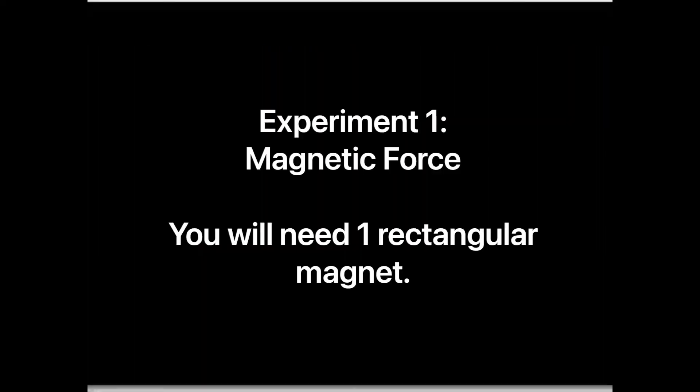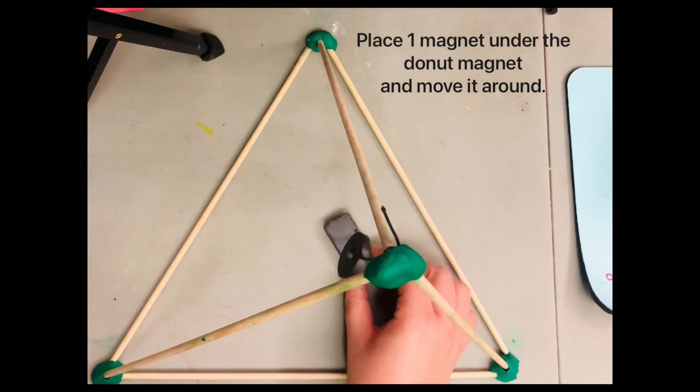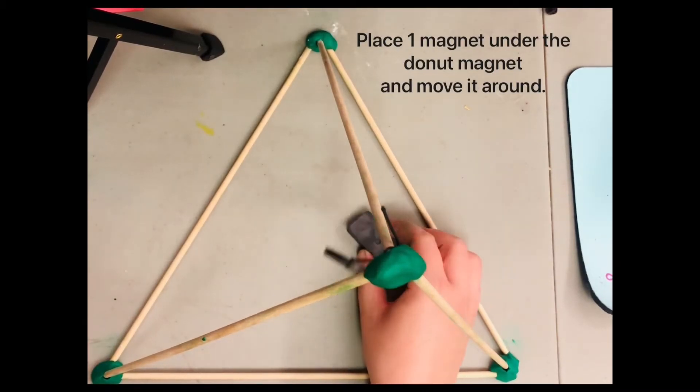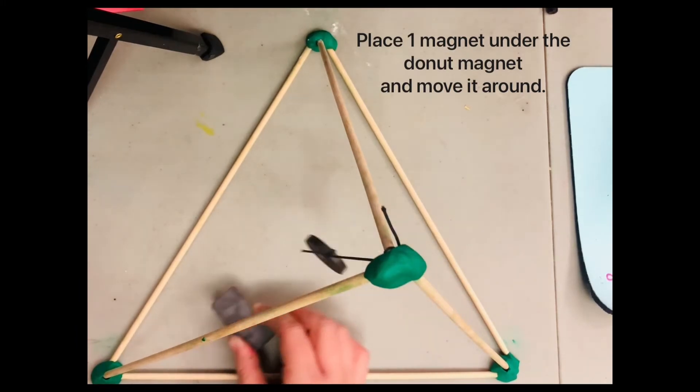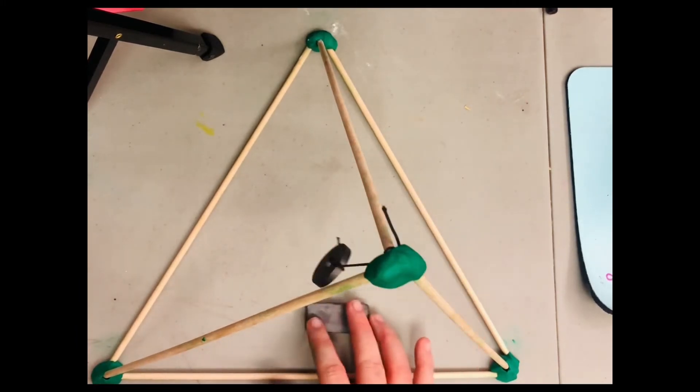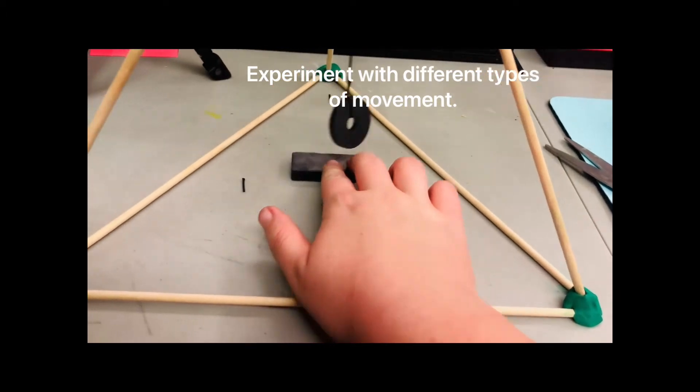Let's do our first experiment. You will need one rectangular magnet. Place the magnet underneath our donut magnet and move it around. Try different directions and different patterns and watch how our donut magnet follows this magnet.